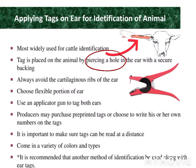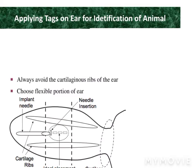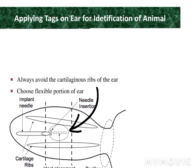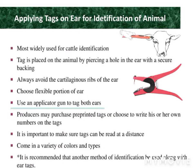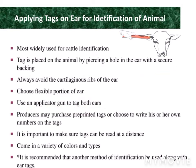Let's discuss the applying process of tags. The tag is placed on the animal by piercing a hole in the ear with backing. Always avoid the cartilaginous ribs of the ear and choose the flexible portion of the ear.